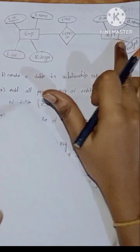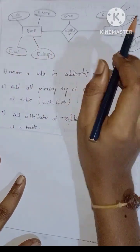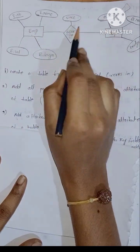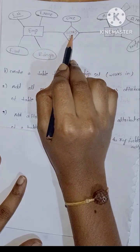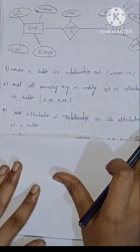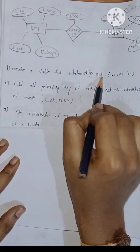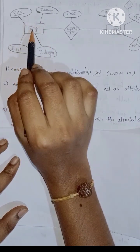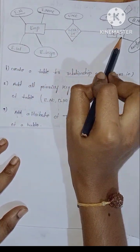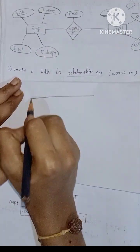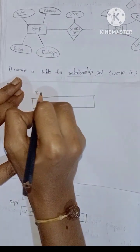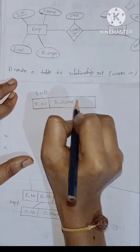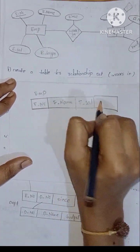We will define the relationship between the entity and the department — employee works in department. We will confirm the employee table with columns: employee number, employee name, employee salary, and employee designation.